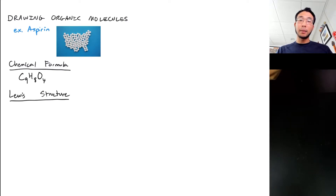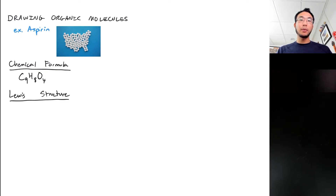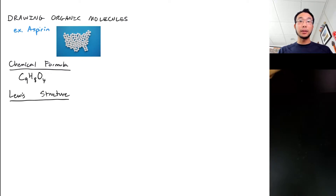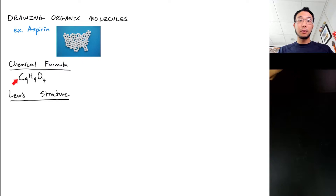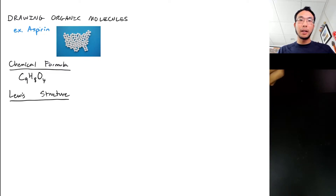The problem with organic molecules such as aspirin — which is actually relatively simple — is that there are just too many ways of combining these atoms together to make a valid Lewis structure. So this one single chemical formula could have many, many different possible isomers that you could draw, and not all of those are aspirin.